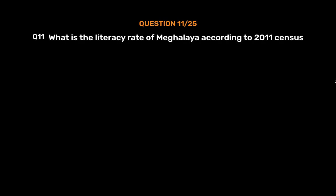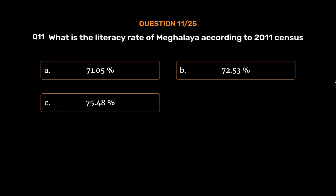Question number 11. What is the literacy rate of Meghalaya according to the 2011 census? Option A: 71.05%. Option B: 72.53%. Option C: 75.48%. Option D: 79%.